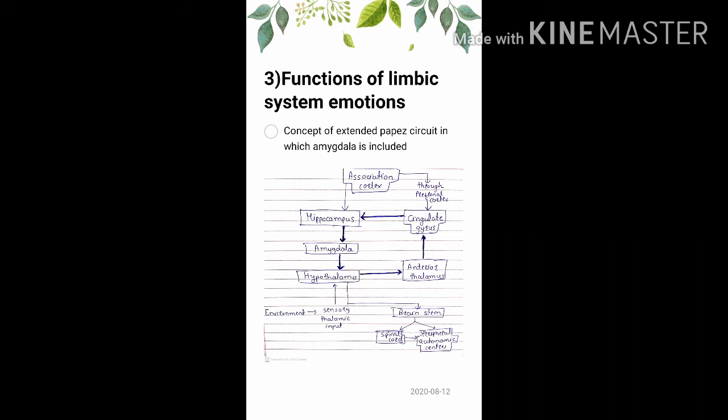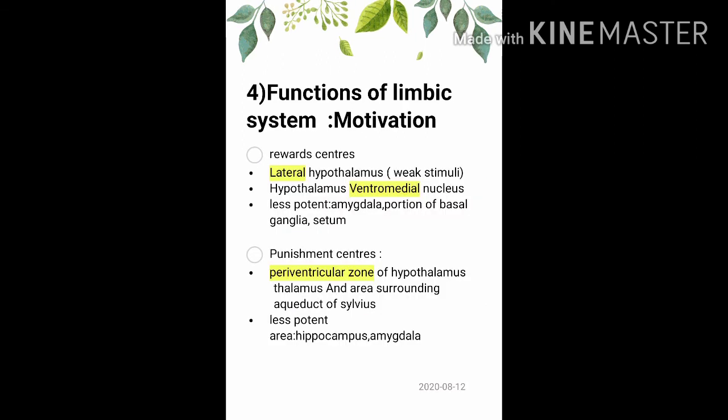Another sensory input comes from the environment — it goes to the sensory thalamic input and from there to the hypothalamus. The final efferent projections are through the hypothalamus, which connects to the brainstem, and from the brainstem there are connections to the spinal cord and autonomic centers. In this way, emotion and behavior are regulated.